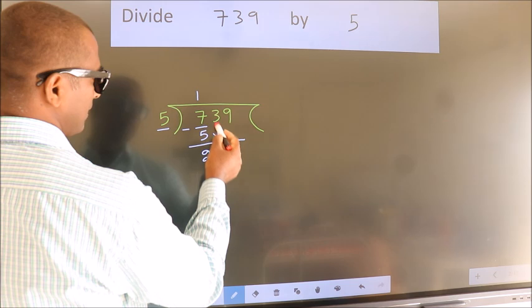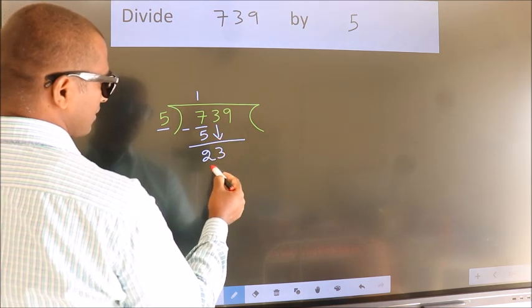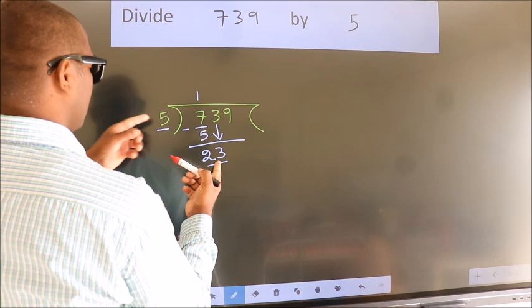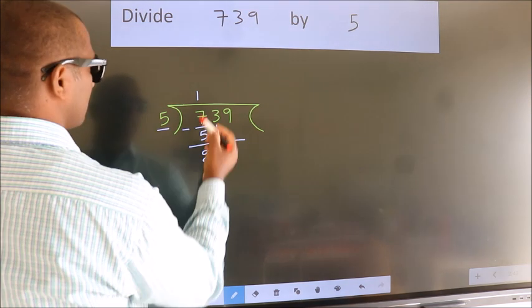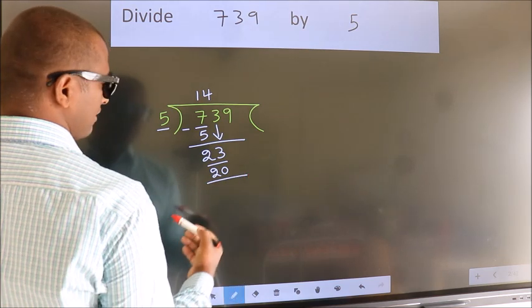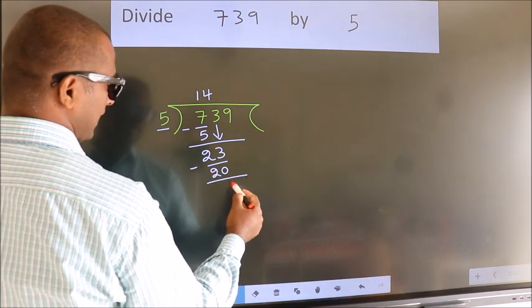bring down the beside number. So 3 down. So 23. A number close to 23 in the 5 table is 5 fours, 20. Now we subtract. We get 3.